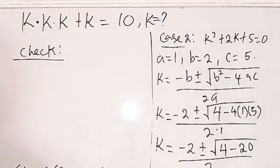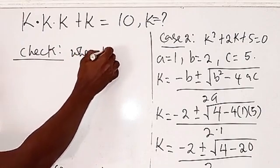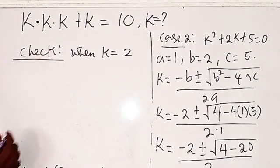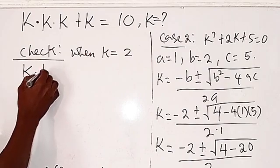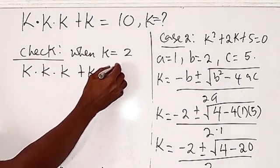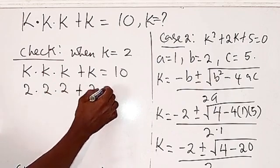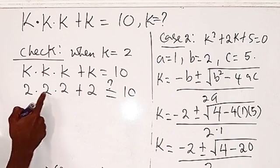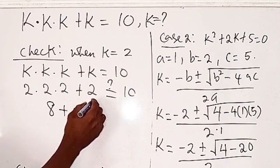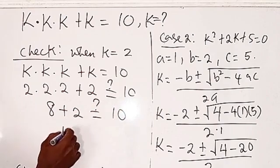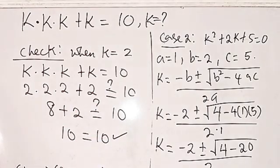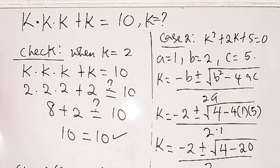Let's quickly check for when k equals 2, which is the real solution. We're going to have k dot k dot k plus k equals 10 — that is the original equation. So we have 2 times 2 times 2 plus 2: 2 times 2 times 2 gives us 8, plus 2 gives us 10. So 8 plus 2 equals 10. Verified! If you put the complex roots back in as well, using a calculator, you will see that they also satisfy the given equation.